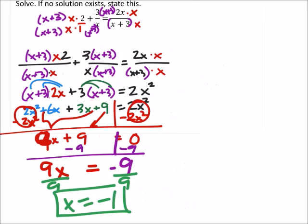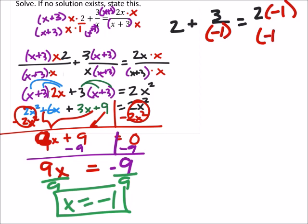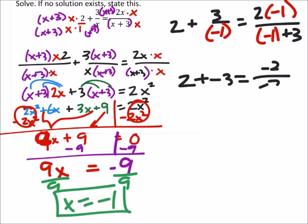All right. So checking this thing, we had 2 plus 3 over x, but we're saying x is negative 1. And this should equal 2 times x, which again is negative 1. We're going to have 1 in the denominator as well, plus 3. So this would be 2 plus negative 3 equals negative 2. Negative 1 plus 3 is also negative 2.